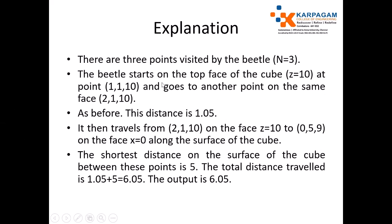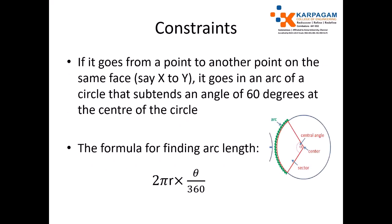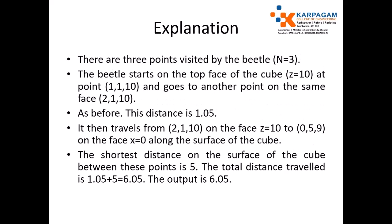For another input, consider N equal to 3. The beetle starts on the top face of the cube where Z equals 10, at 1,1,10, and goes to another point on the same face: 2,1,10. The face is the same, so we identify the straight-line distance between the two data points, which is 2 minus 1 equals 1. We find the arc length and applying the formula 2πR × θ/360, we get 1.05.